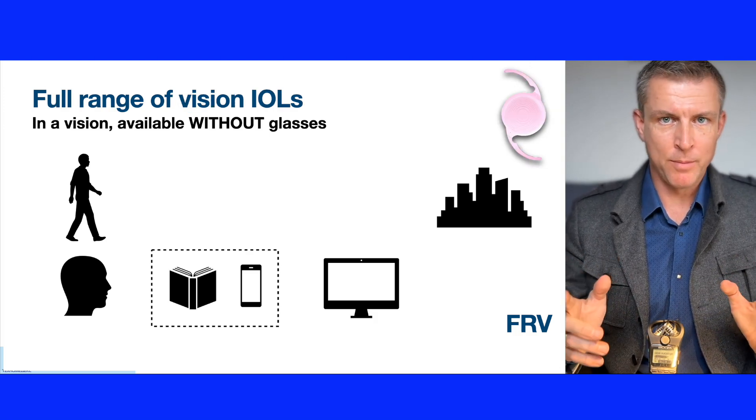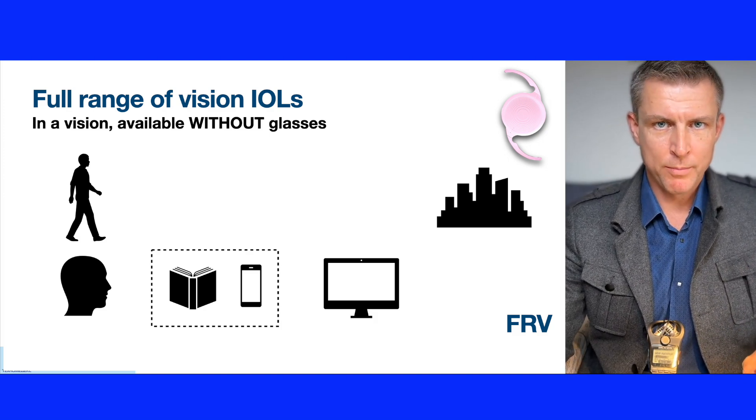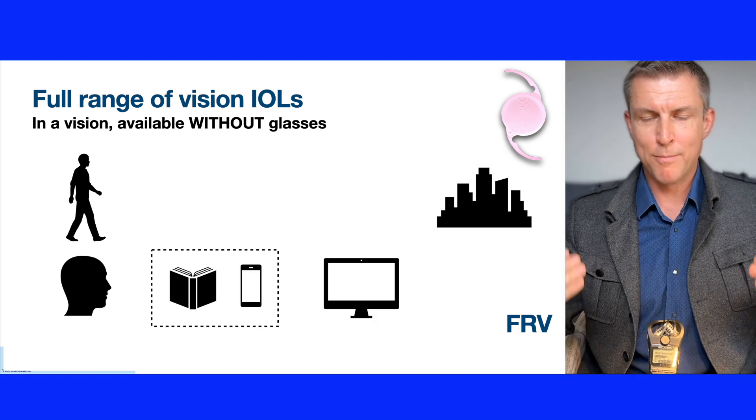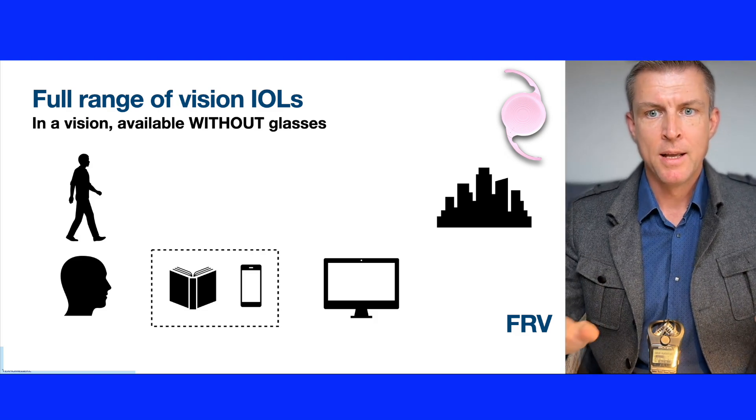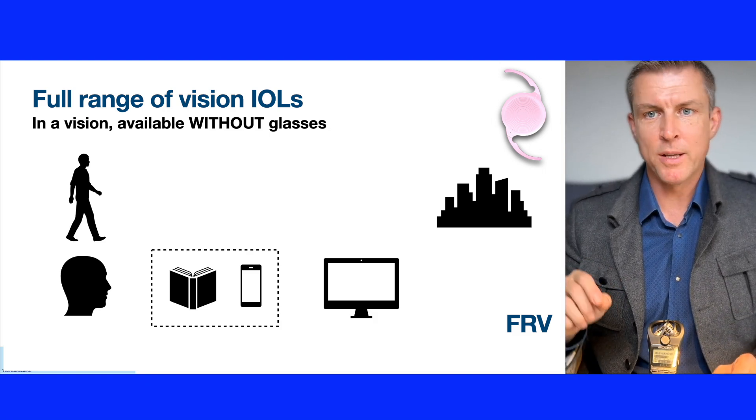The fourth IOL type is the full range of vision lens. These lenses are designed to provide full range vision without glasses for long and comfortable reading, intermediate work, and far vision. However, they require more precise calculation and implantation. Regarding the light adjustable lens — what IOL type does it belong to? Write in the comments and I'll tell you if you're right. In my next video I'll do a deep review of light adjustable lens technology, the best candidates, and whether you should go with LAL or another IOL type.